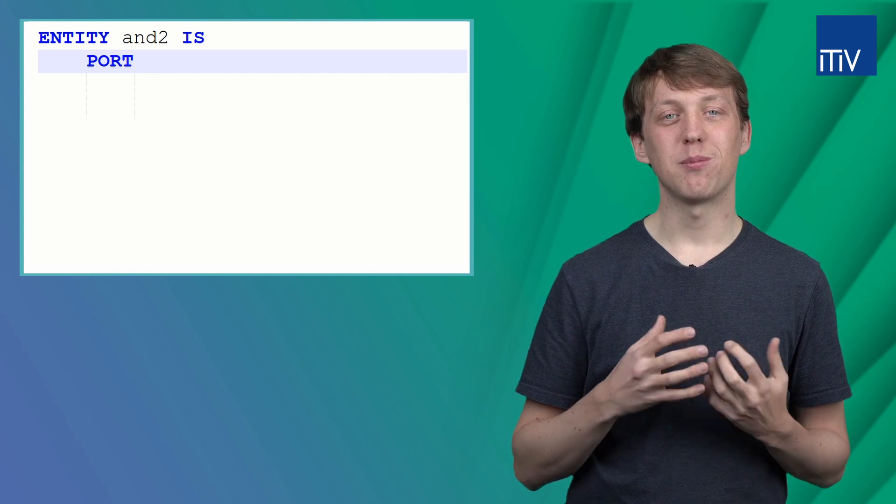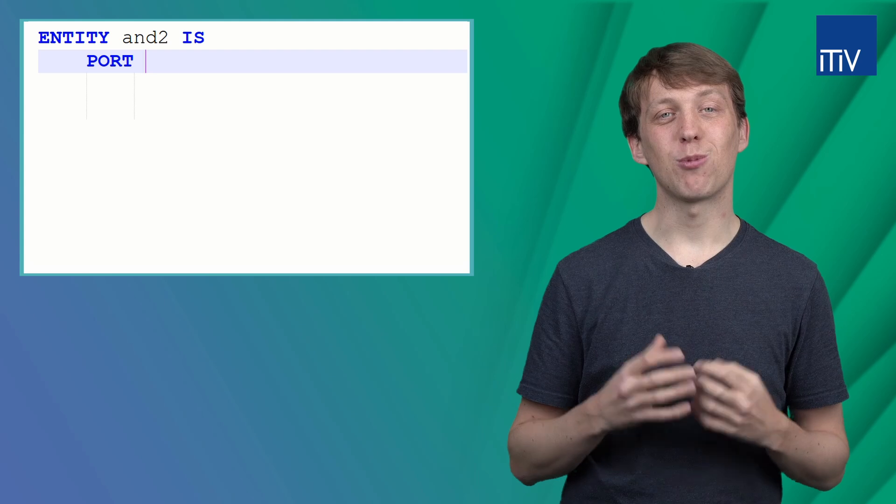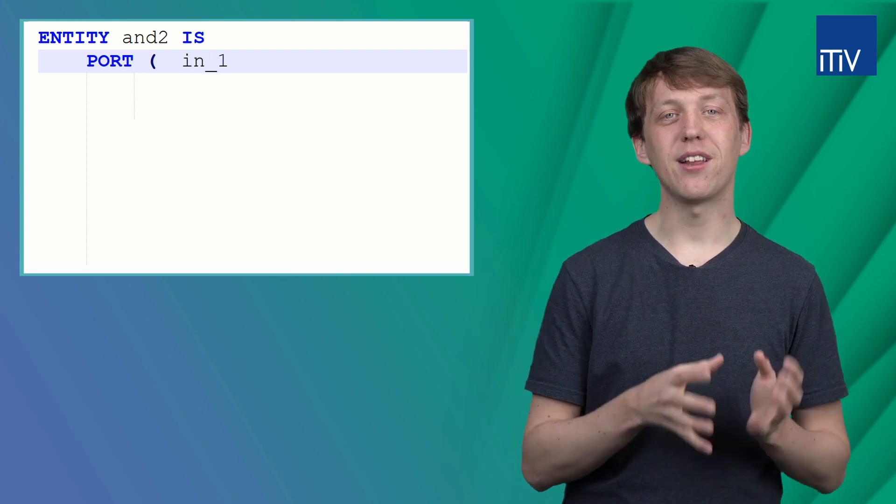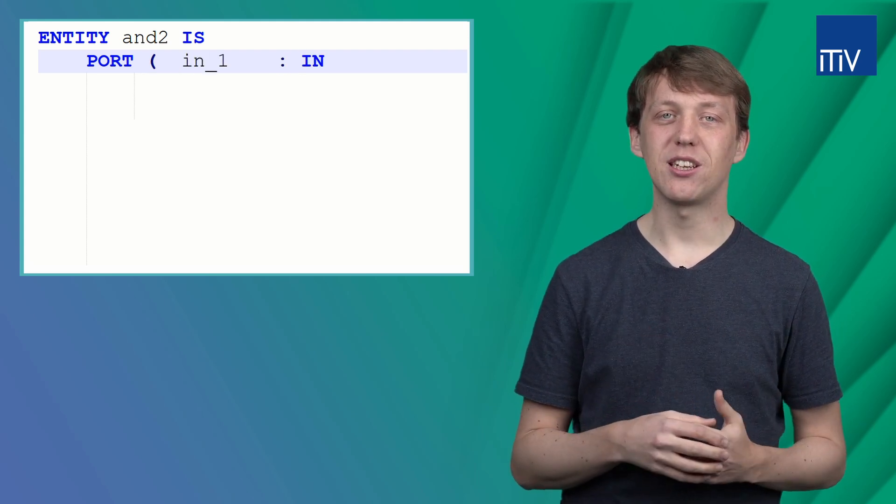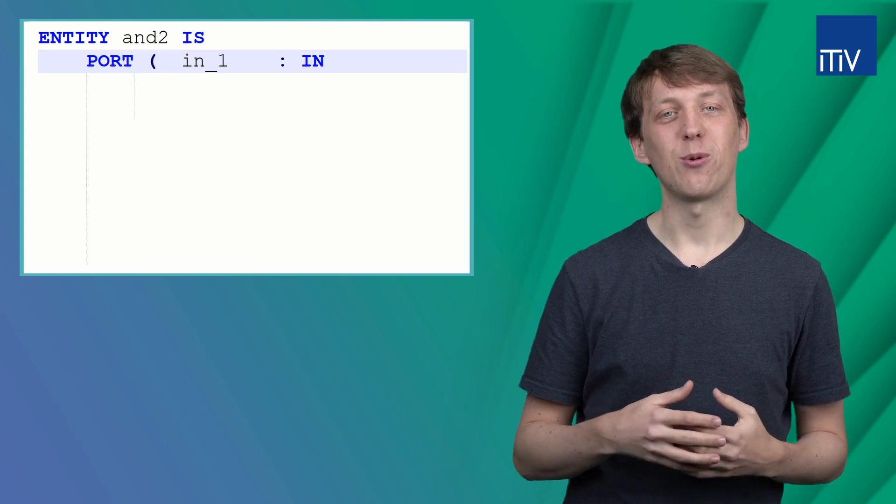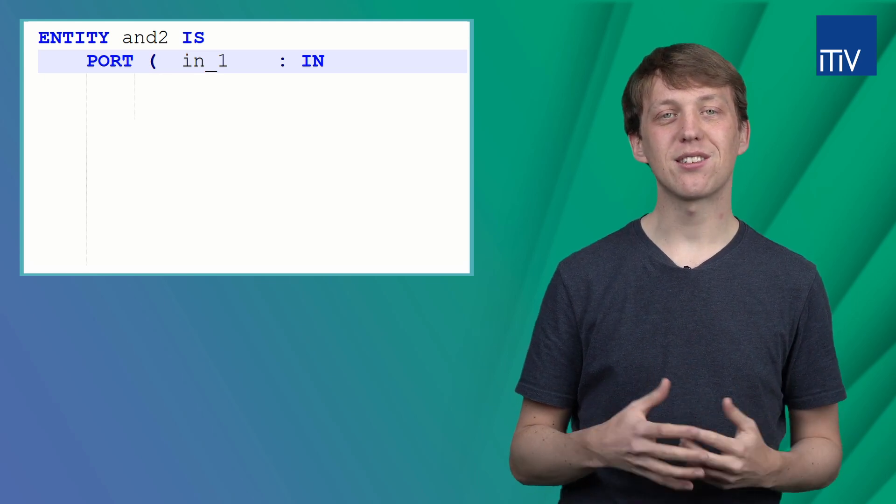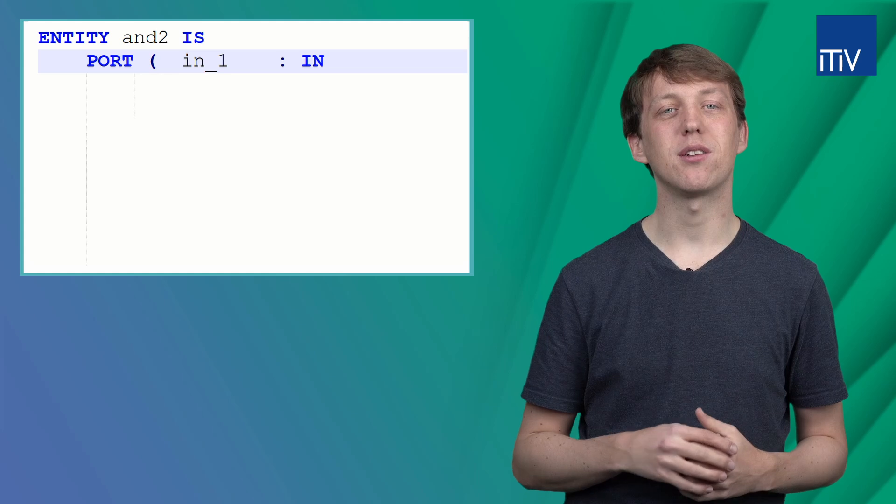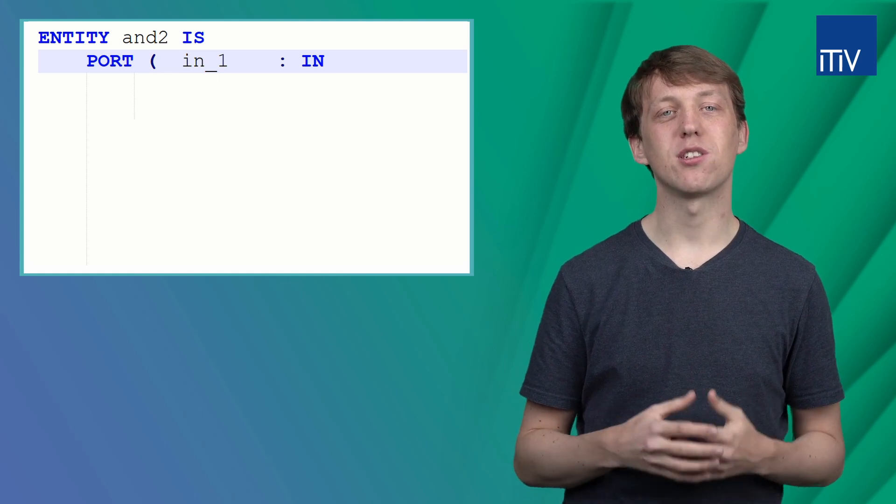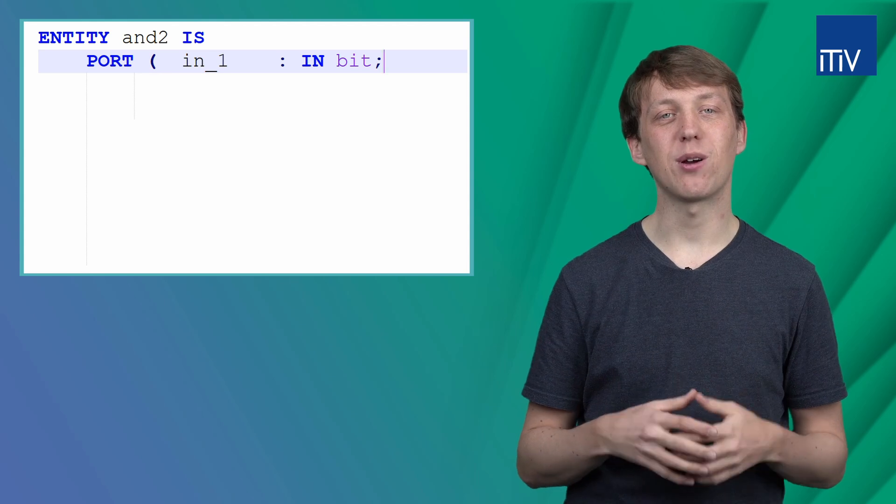Our first input port's name is IN1. So we first type the name, then a colon and the keyword IN to declare the port as an input port. Finally we have to set the width of the input port. In this case we only have one bit as input, so we use the type bit. The line has to be finished with a semicolon.